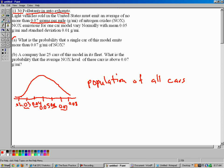Question A. What is the probability that a single car of this model emits more than 0.07 grams per mile of nitrogen oxides? In other words, what's the probability that a car fails the emissions test? So 0.07 is right there.